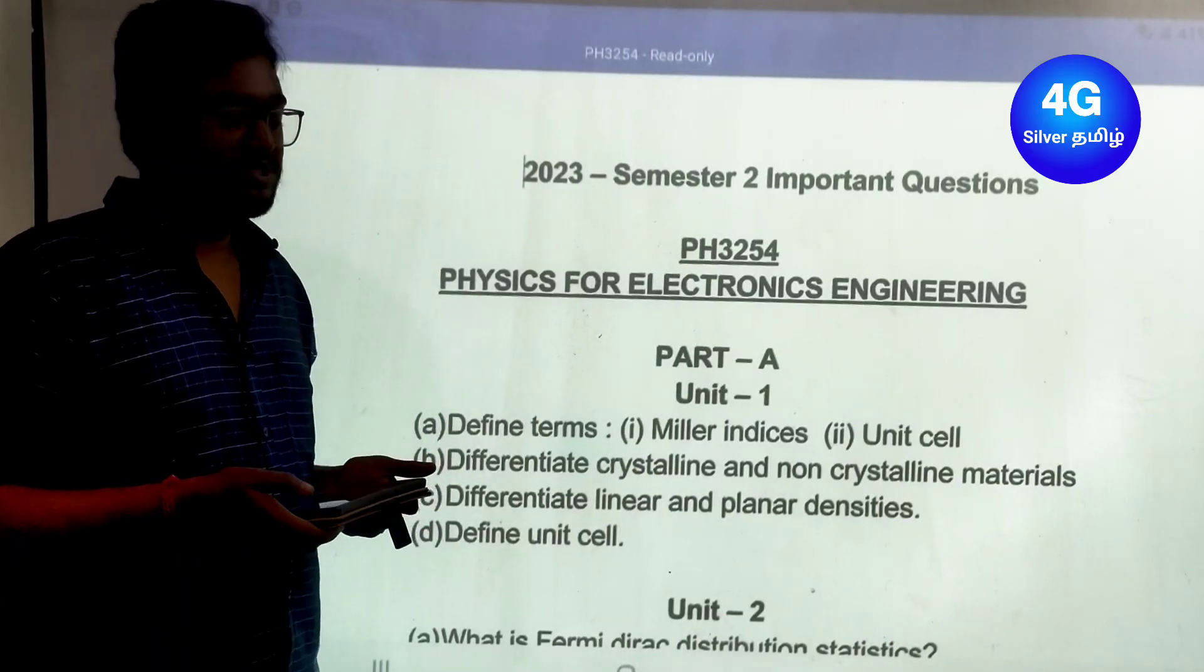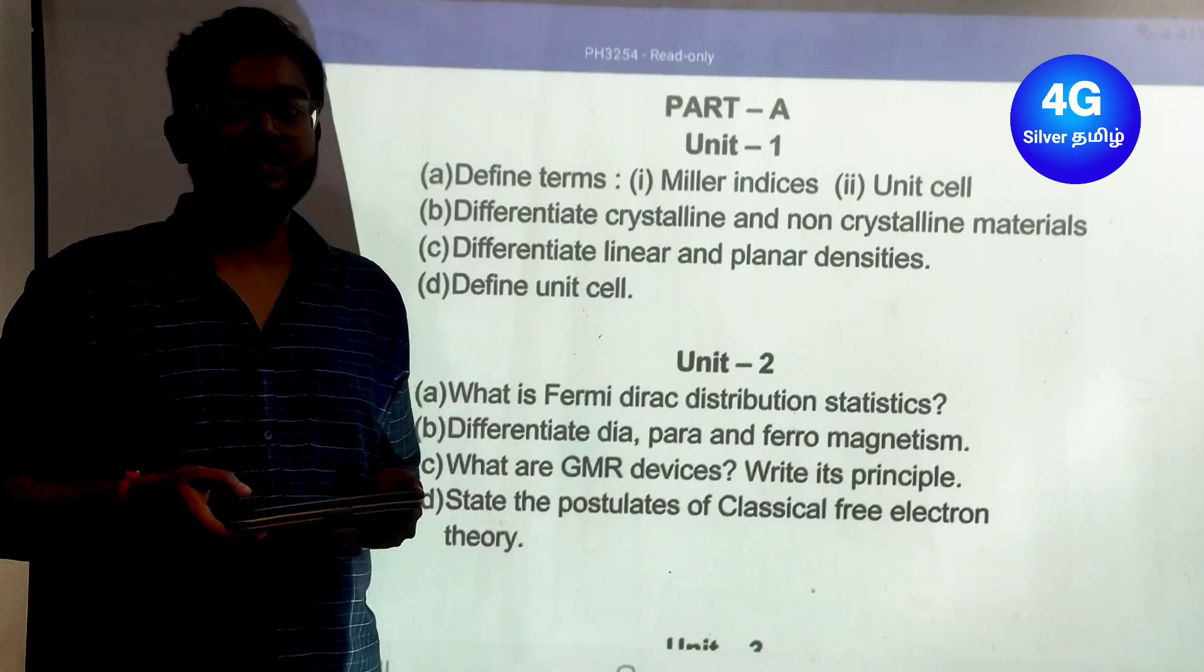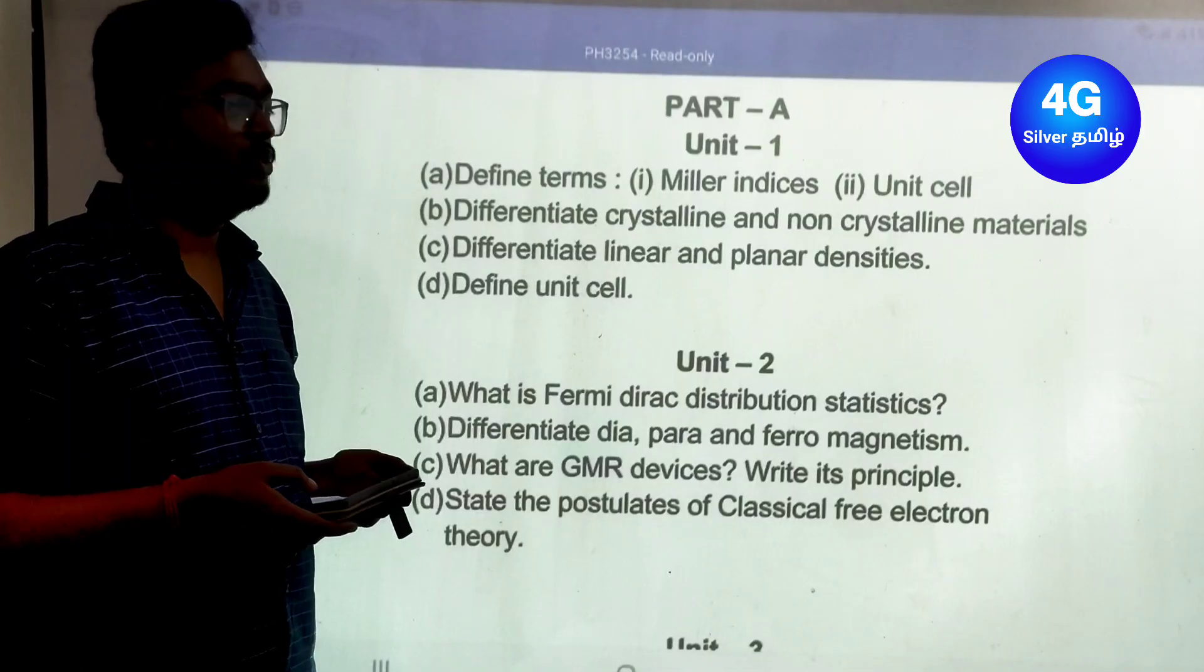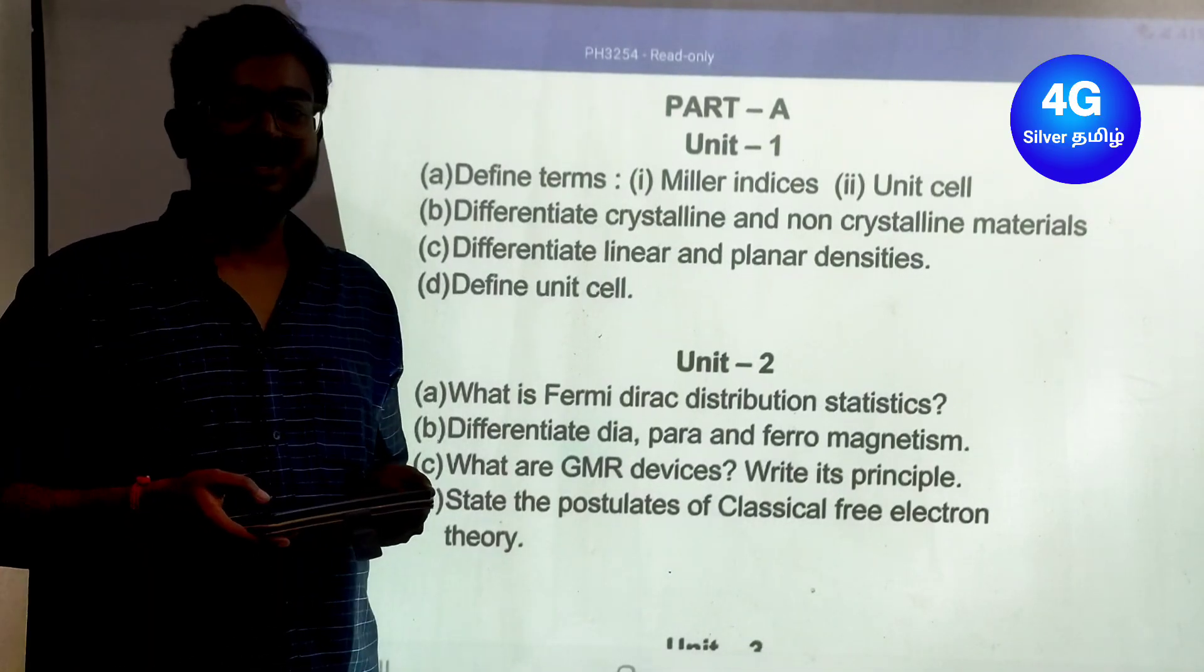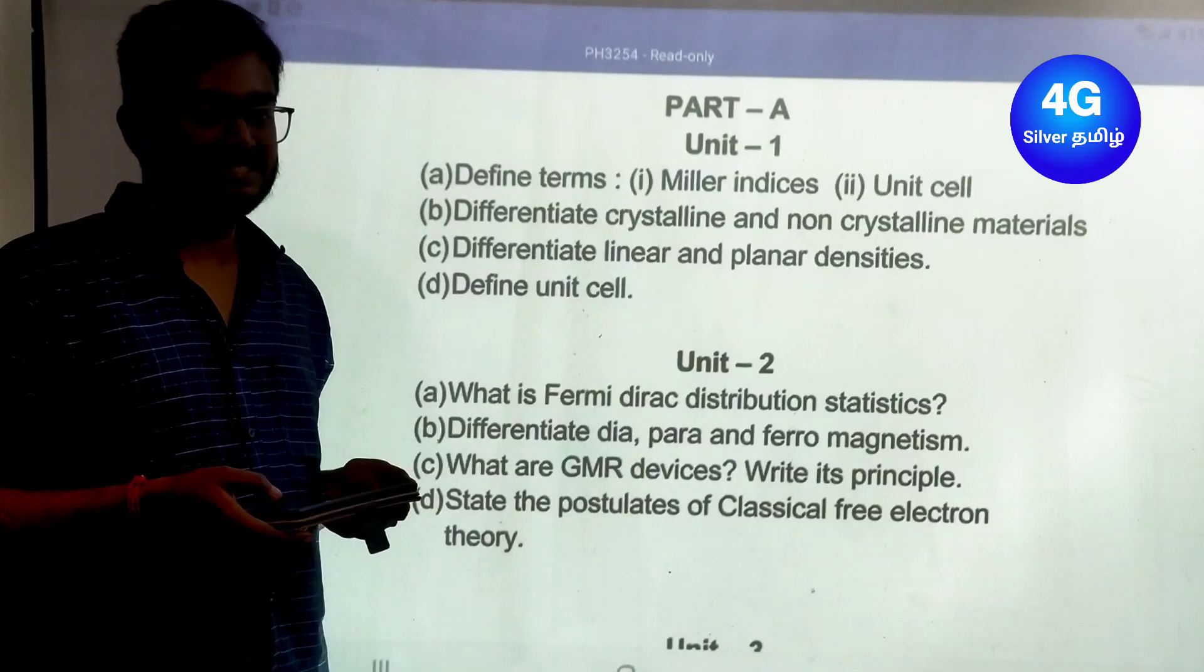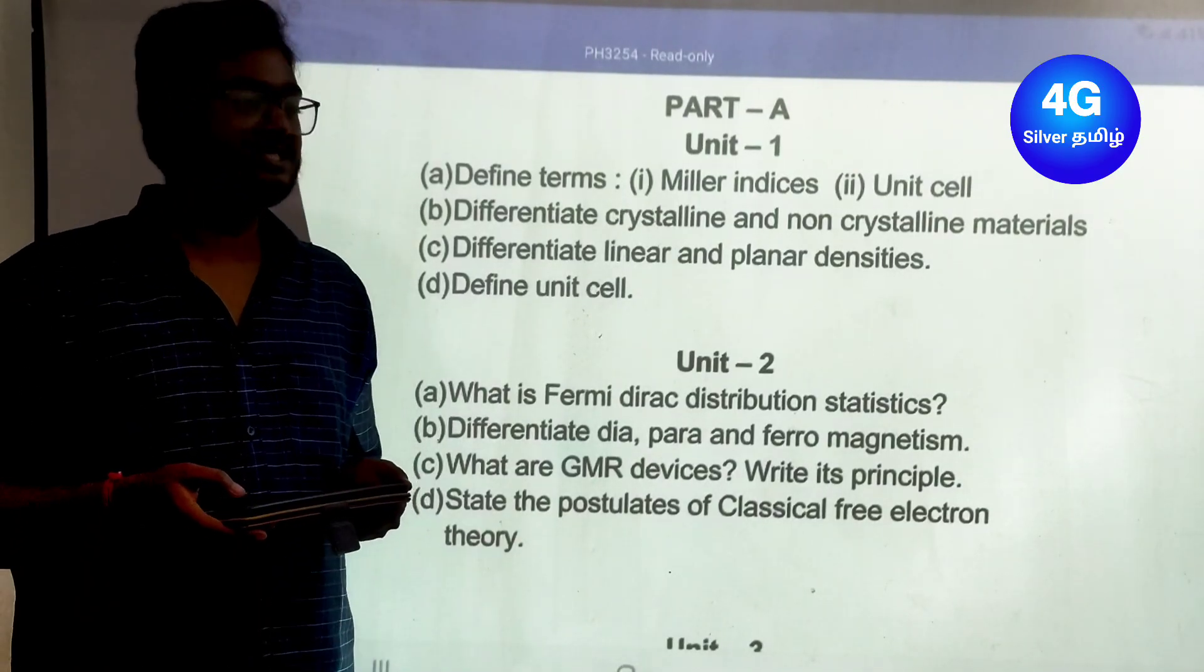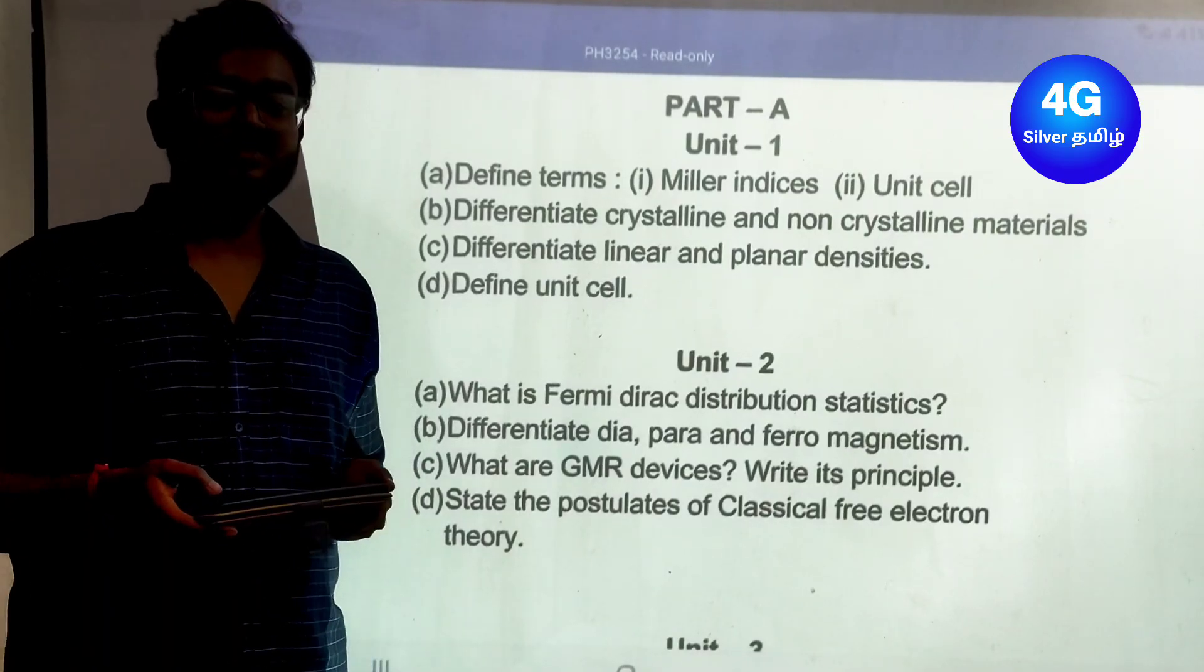Important Part A questions: Unit 1, two marks - define the terms miller indices, unit cell, differentiate crystalline and non-crystalline materials, differentiate linear and planar density, and define unit cell. These are the Unit 1 important two-mark questions.